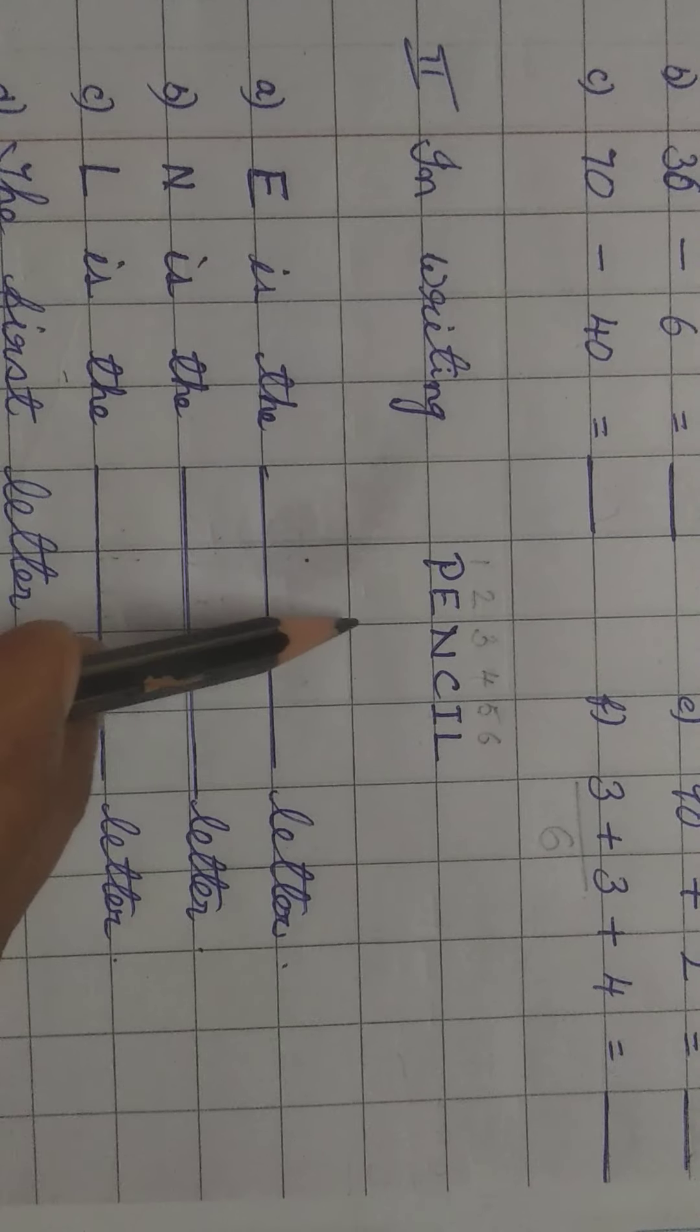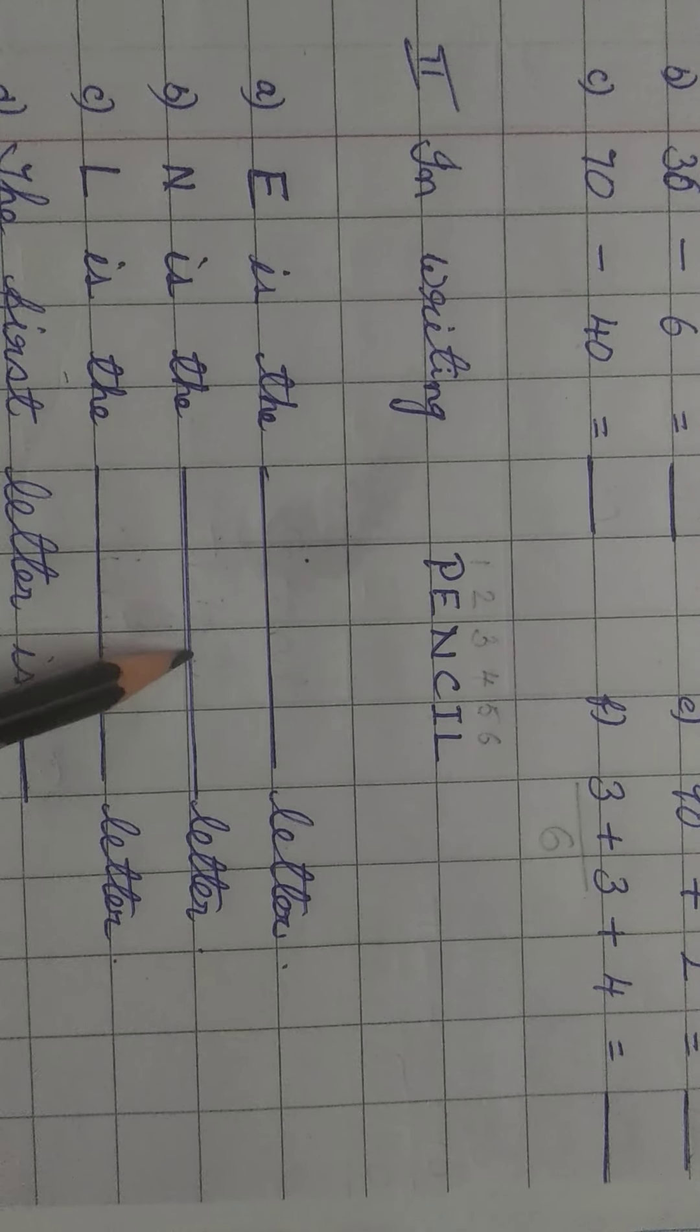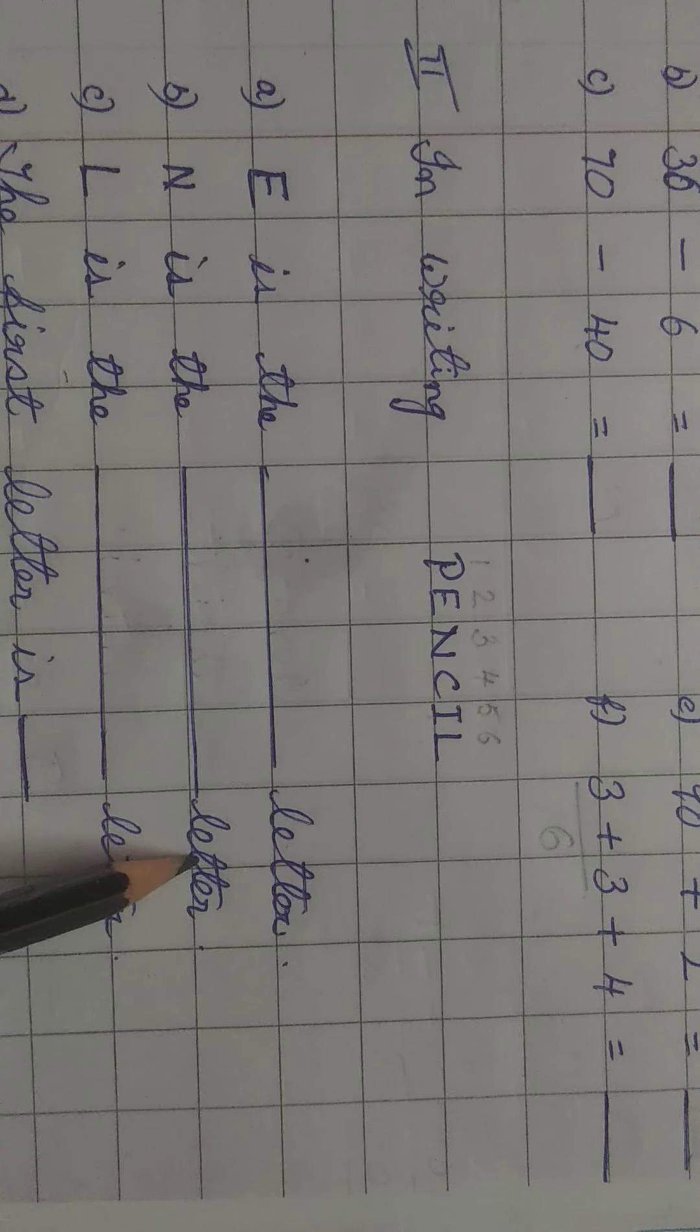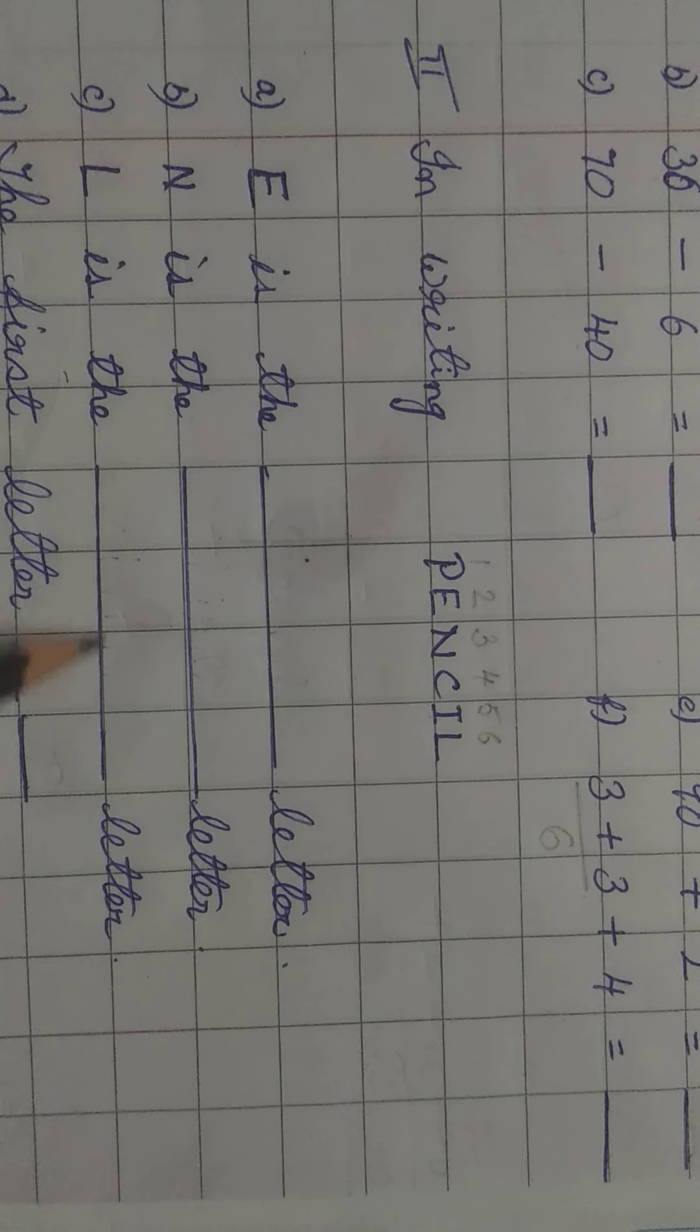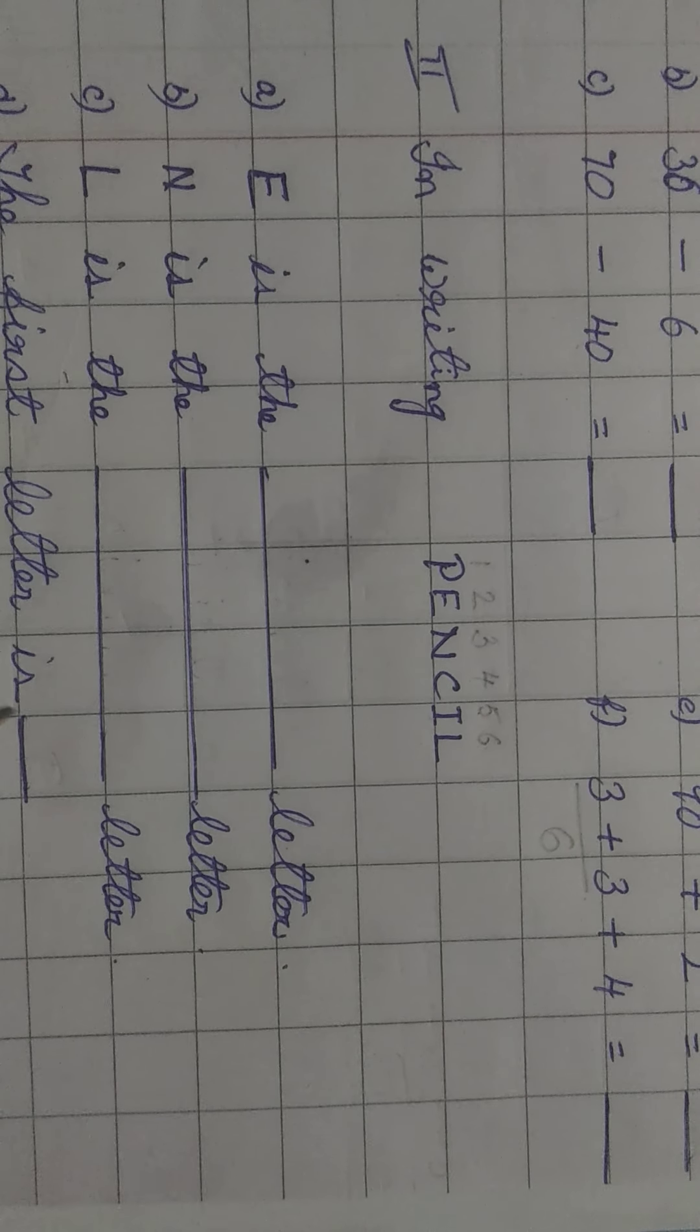N is the dash letter. What is the place of N? Third place. N is the T-H-I-R-D third L-E-T-T-E-R letter. L is the dash letter. L is the sixth letter. S-I-X-T-H sixth.